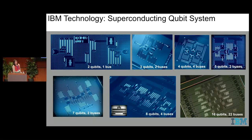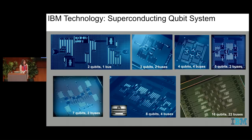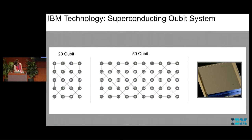In terms of scaling, here are different devices that we've had at IBM: starting from a two-qubit device, then three, four, five — this is one of the quantum experience devices — then seven, eight, and the 16-qubit 22-bus device, which is the newer quantum experience device, IBM QX5, that we have now. We have also announced our commercial program: the 20-qubit and 50-qubit devices with these connectivities. So along with improving coherence, we're increasing the number of qubits.